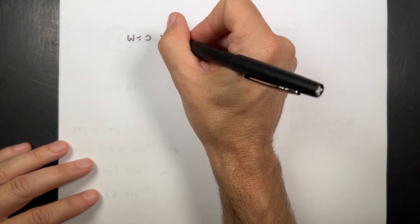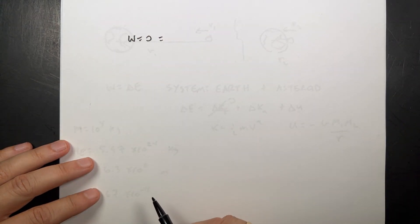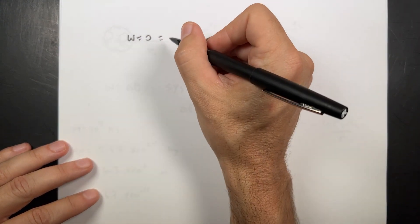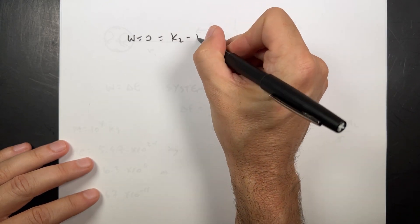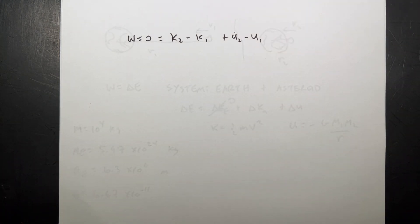So work is zero. And that's going to be equal to, I'm just going to write k as the kinetic energy of the asteroid. We already said the other one's zero. So it's going to be k2 minus k1 plus u2 minus u1. Now, I always like to think, are any of those values zero? And in this case, the answer is no. None of these are zero.